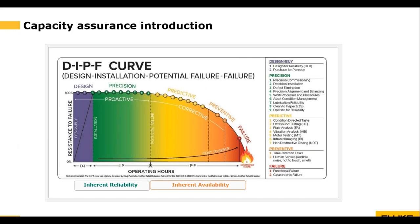Let's start by looking at the potential failure curve. Many of you have probably already seen this curve. At the end of the curve, way over on the right, you can see that's where failure happens and catastrophe. We all want to prevent that from happening. In the past we were looking at time-directed tasks — preventive type tasks — but that sometimes is a little too little, a little too late. So we want to move into the predictive side.